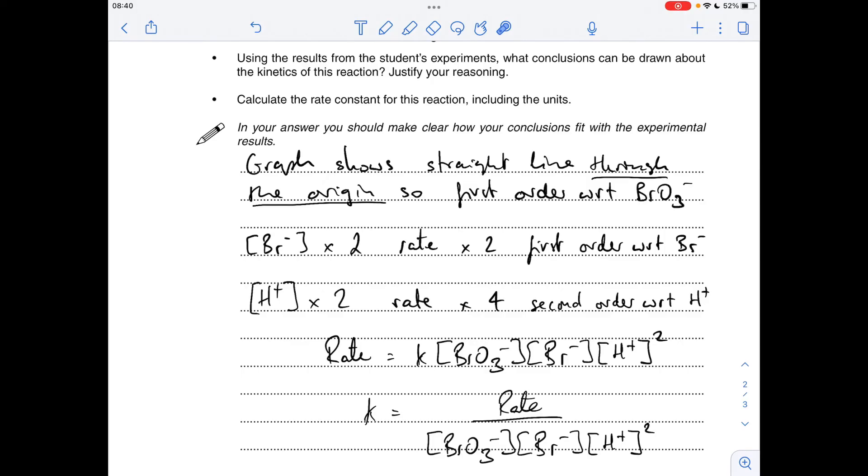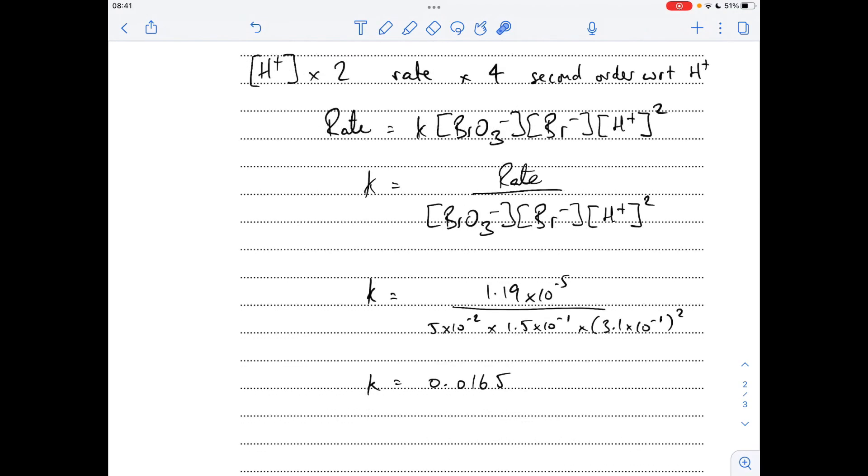I always use row one unless told otherwise. It doesn't matter which row you use because these have all been done at the same temperature, so you get the same value for k. So using the values from the first row, I'm getting a k value of 0.0165.